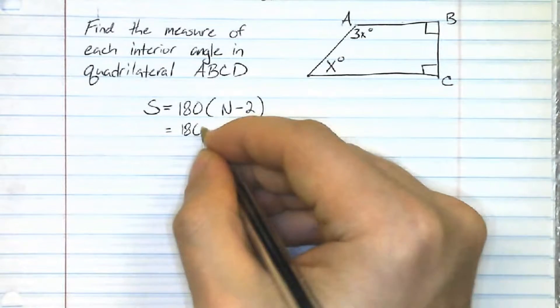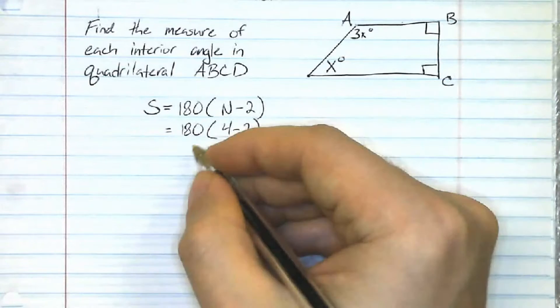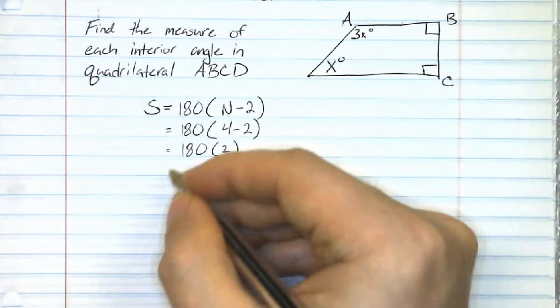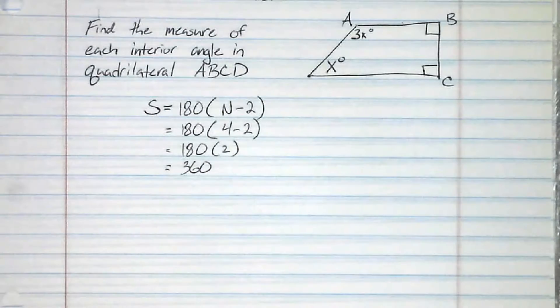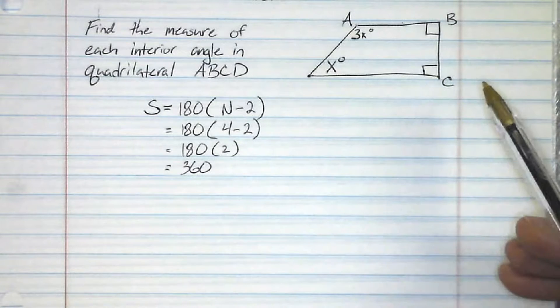We're going to rewrite this. 180 times 4 minus 2 equals 180 times 2 equals 360. So now we know that all of these have to add up to 360.